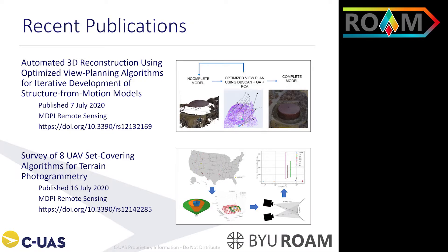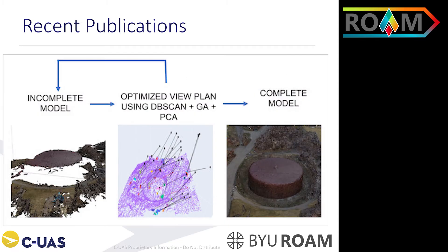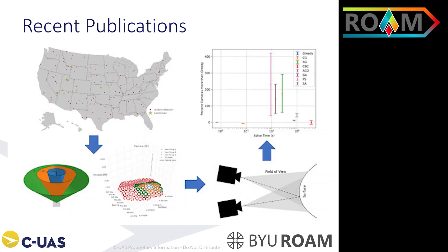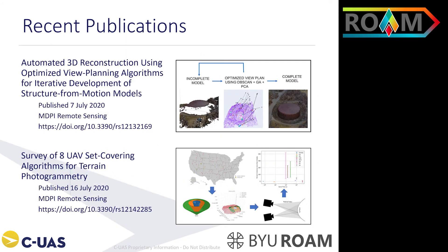We're proud of our students' progress, and even in the last month we've had two publications in the top-rated remote sensing journal. The first one is iterative view planning, using machine learning to identify gaps in the models and adjust the view planning in successive iterations to capture additional information. The second one is a comparison of eight different view planning algorithms at randomized or focused locations to see which ones are going to perform better overall.